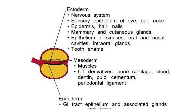Neuroectoderm gives rise to everything related to the nervous system, and somatoectoderm gives rise to the rest of the epithelial tissues. Mesoderm gives rise to muscles and connective tissues, including derivatives like bone, cartilage, blood, dentine, pulp, cementum, and periodontal tissue. Endoderm gives rise to GI tract epithelium and associated glands inside the body.